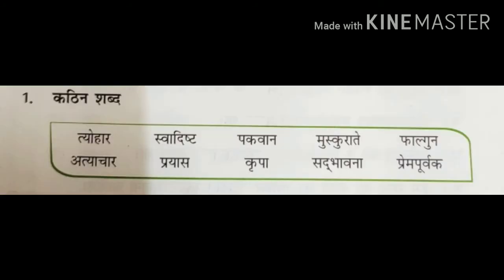अब हम देखेंगे कठीन शब्द (Now we will look at difficult words). First word is त्योहार (festival), स्वादिष्ट (delicious), पकवान (special food/dish), मुस्कुराते (smiling), फालगून (the month of Falgun).